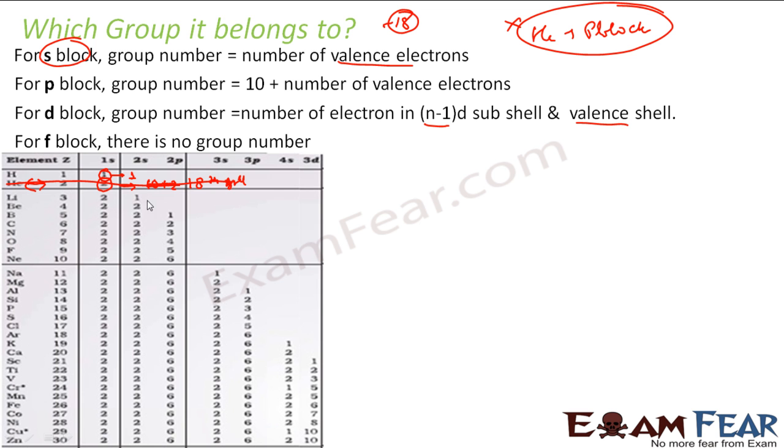Let us start with lithium. Lithium is again s block. Outermost is in s, s block, so the number of valence electrons will give you the group number. So it is 1. Beryllium again is in s block. So the group number is the number of electrons in the outermost, that is 2. Boron, boron is p block and the number of valence electrons is 1. So the group number will be 10 plus 1 is 11.